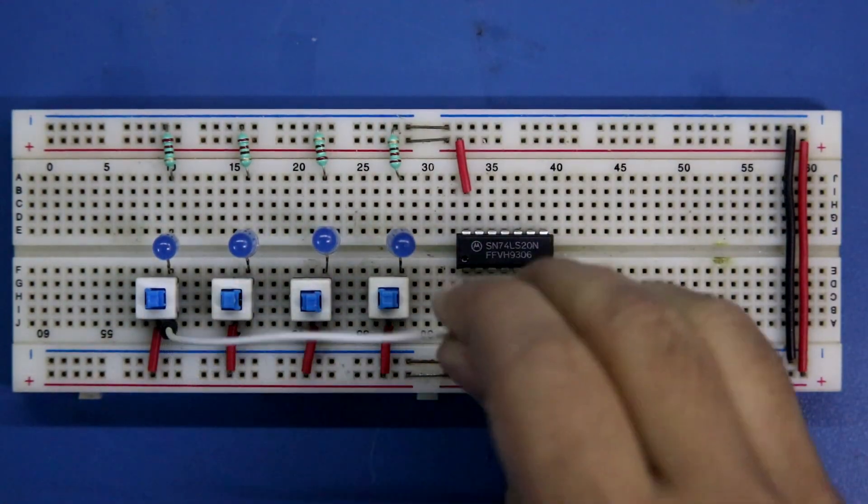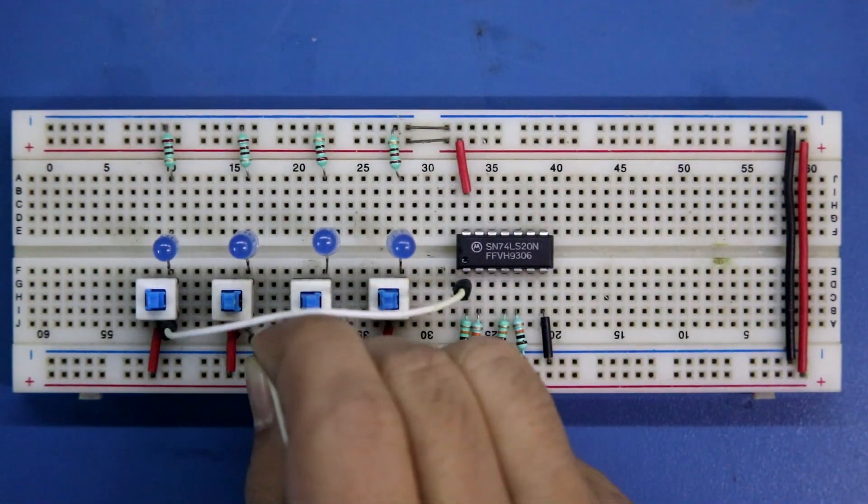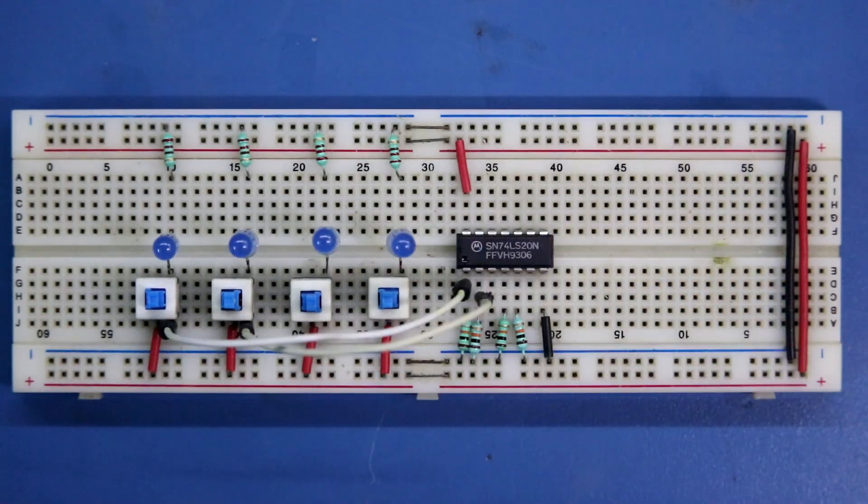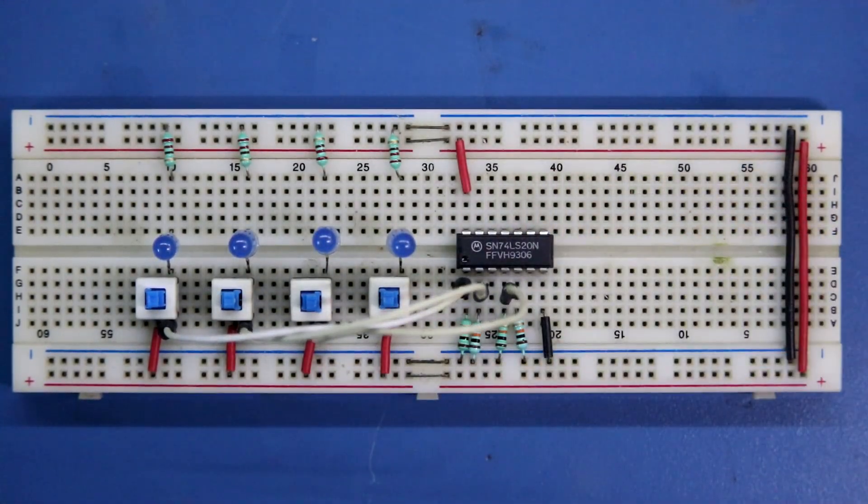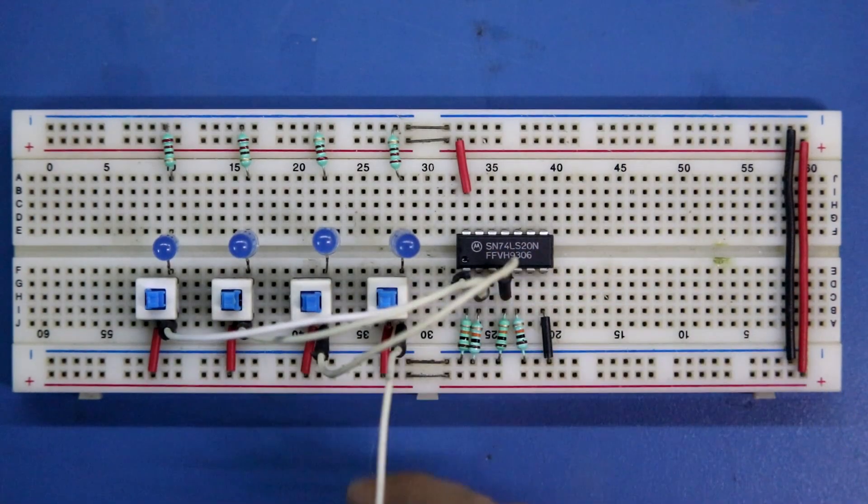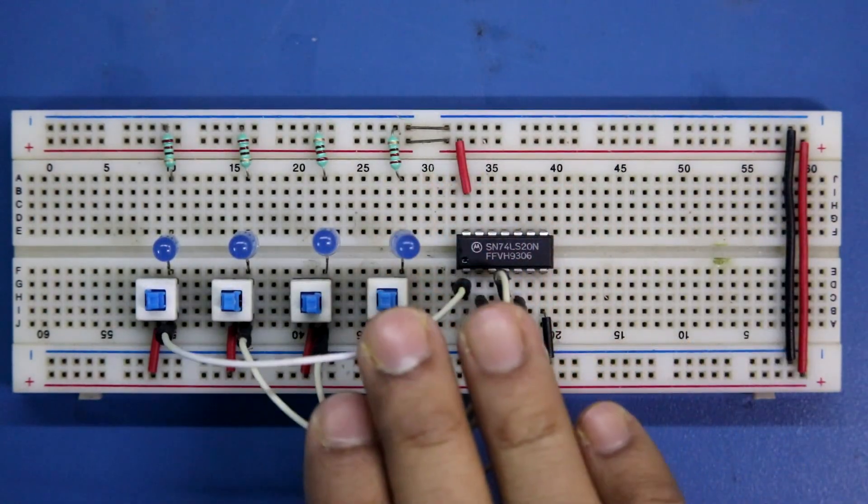Switch A is connected to pin number one. Switch B is connected to pin number two. Switch C is connected to pin number four and switch D is connected to pin number five. This is the input connection.